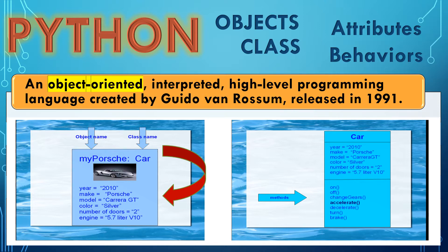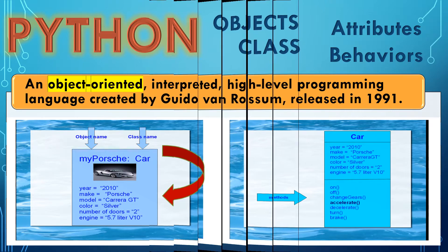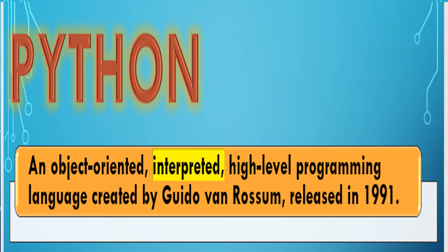The methods include on, off, change gears, accelerate, decelerate, turn, and brake. An application of this example is the computerization of cars, universally referred to as CBS or computer-controlled vehicle system. Now let's talk about Python as an interpreted language. Python is an interpreted language, which reduces the edit-debug cycle because there's no compilation step required. In order to run Python apps you need a runtime environment or interpreter to execute the code.